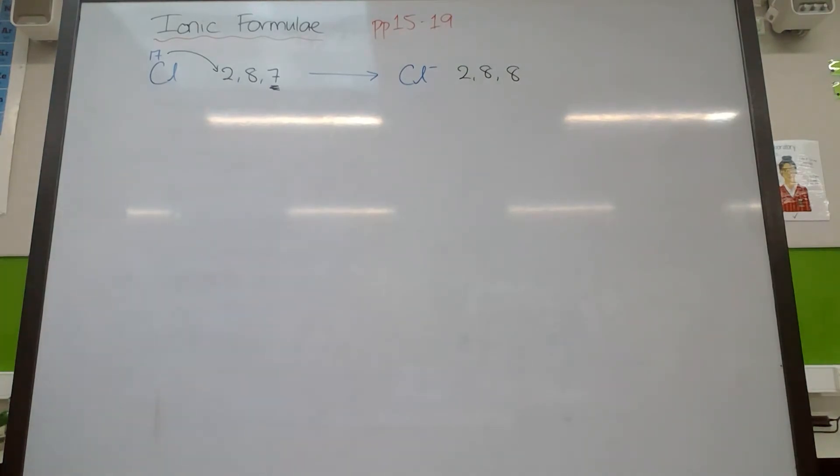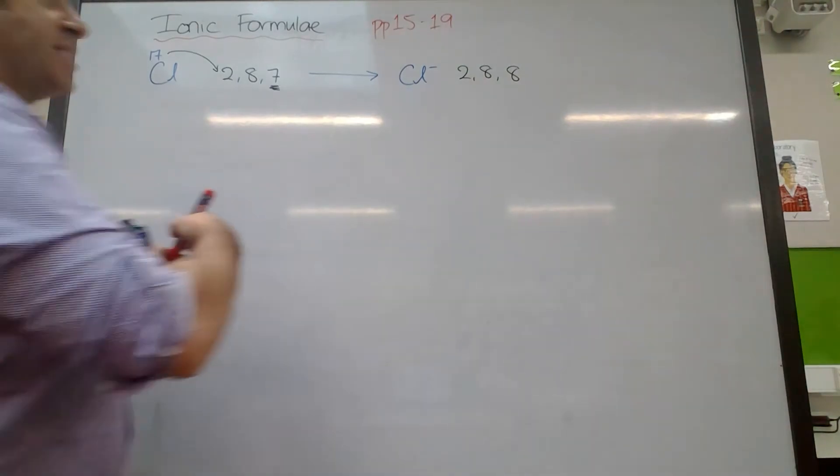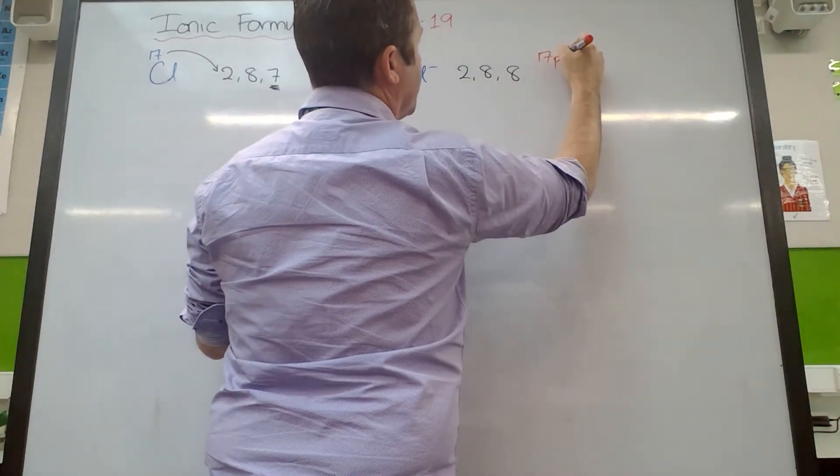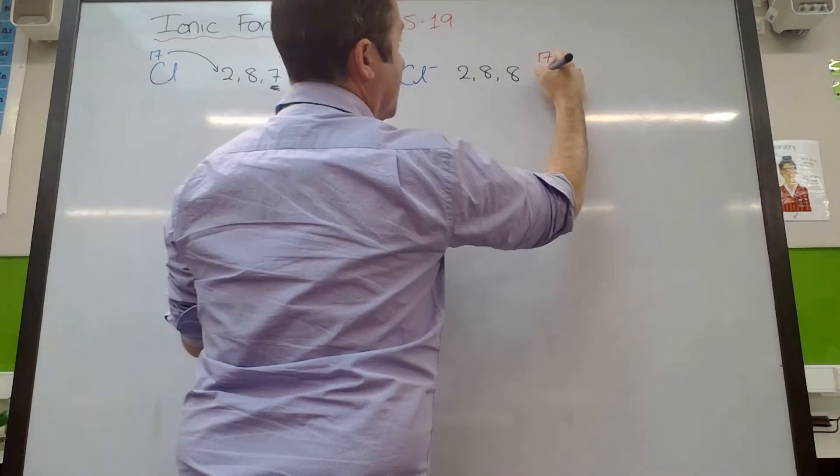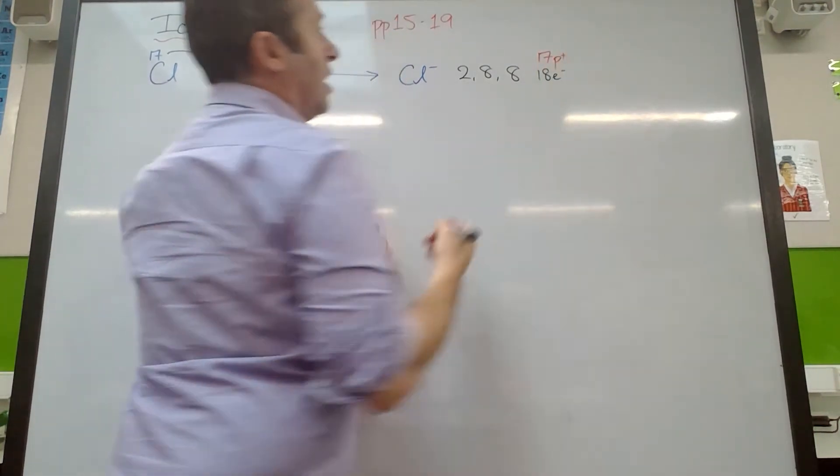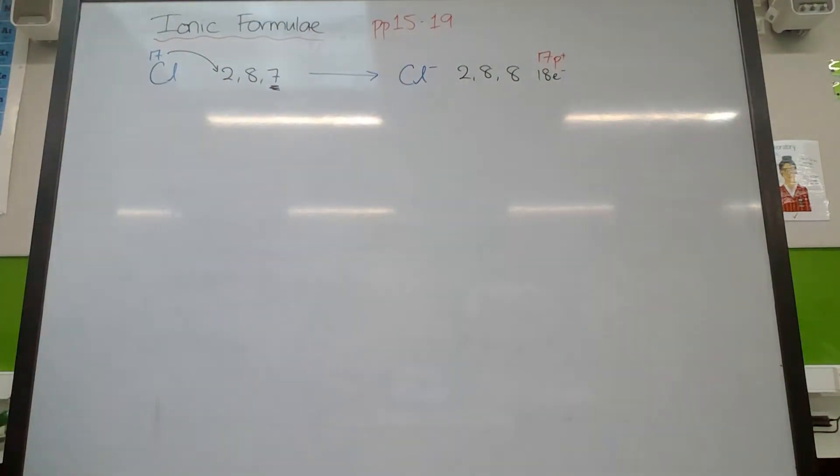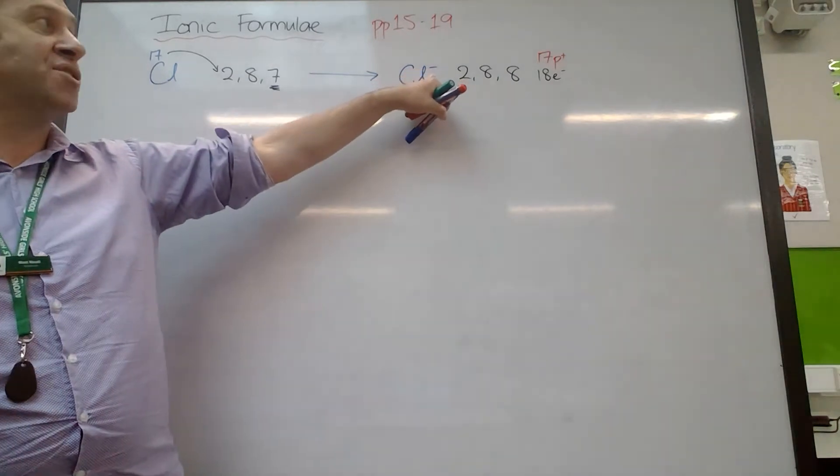It still has 17 protons, so it still has 17 positive charges, so it now has 18 negative charges, and the difference between those is 1 negative, which is why it has a charge of 1 negative.